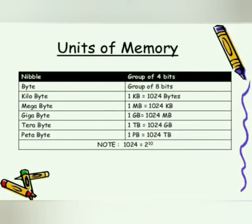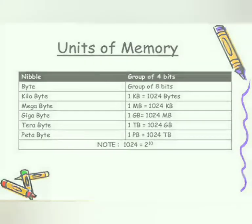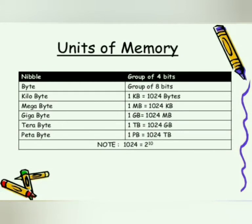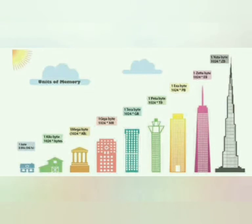A group of 4 bits is called a nibble. A group of 8 bits is called a byte. 1024 bytes make 1 kilobyte; 1024 kilobytes make 1 megabyte; 1024 megabytes make 1 gigabyte; 1024 gigabytes make 1 terabyte; 1024 terabytes make 1 petabyte. Here, 1024 denotes 2 to the power of 10. The units are always arranged from the lowest to the highest quantity, i.e., from bits or bytes all the way up to terabyte, gigabyte, zettabyte, etc.